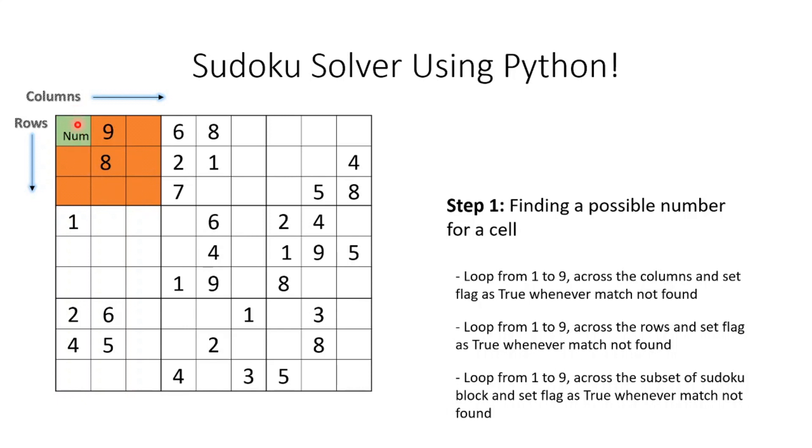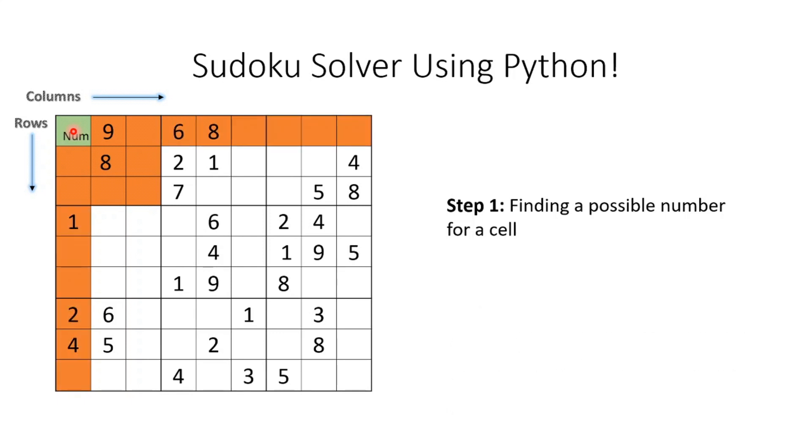So 3 is one possible combination for this number. This is what we're going to do in step one, and I'm going to write a simple helper function to do this.